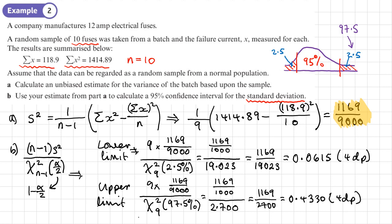These two values here are not my final answer, because that is a confidence interval for the variance. I want a confidence interval for the standard deviation. So I simply just square root these answers. I'm going to square root the exact values that I have. Square rooting 1169 over 19023 gives me 0.247894991. Let's give this to 4 decimal places, so 0.2479.